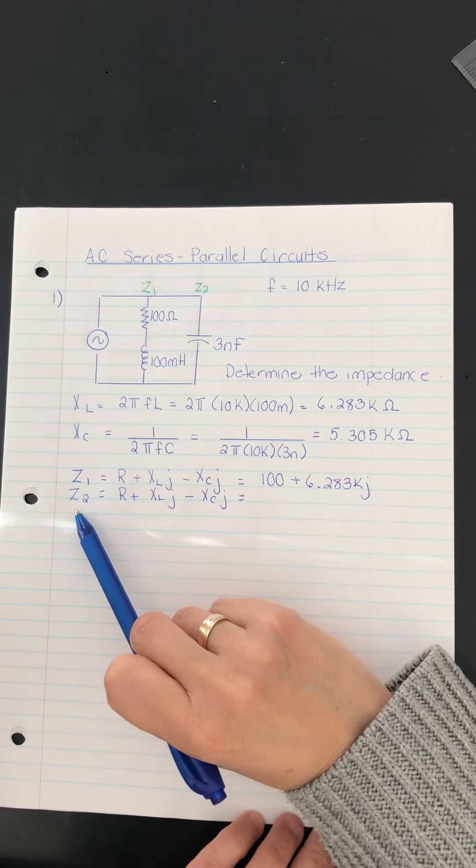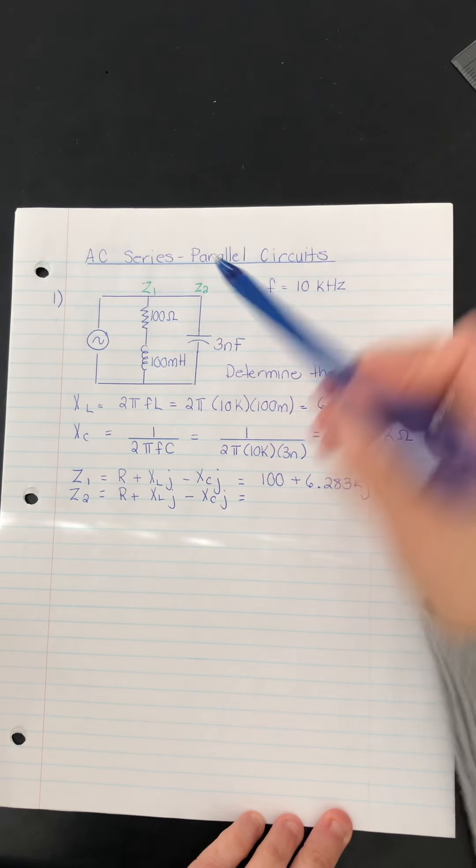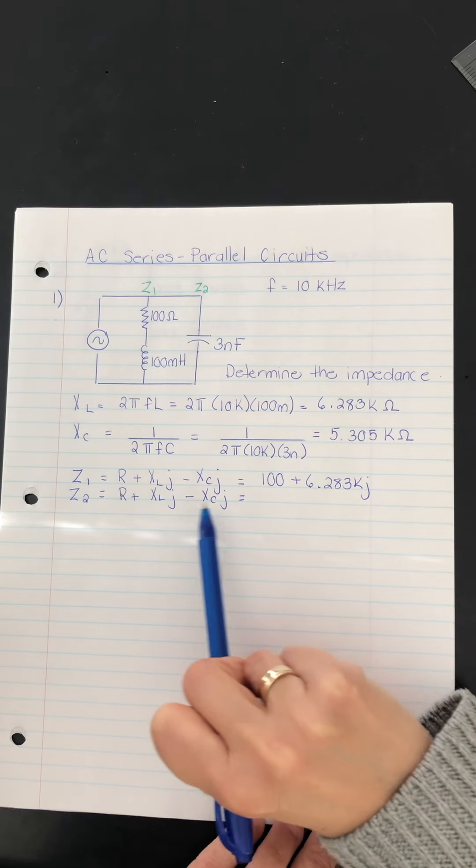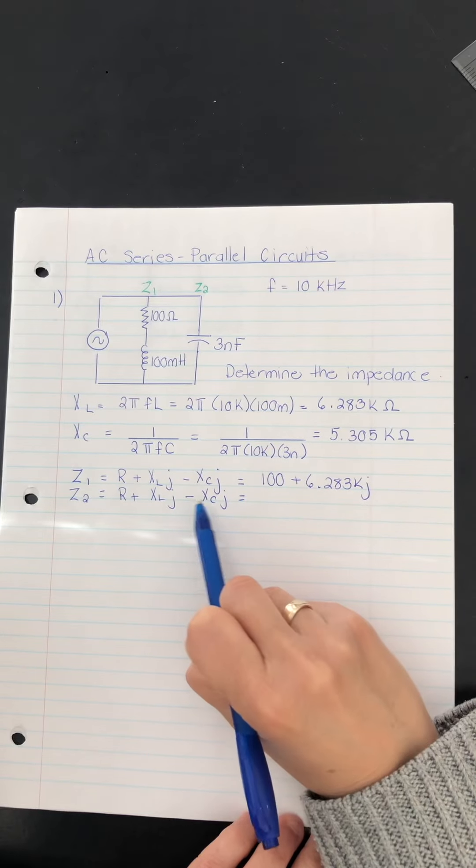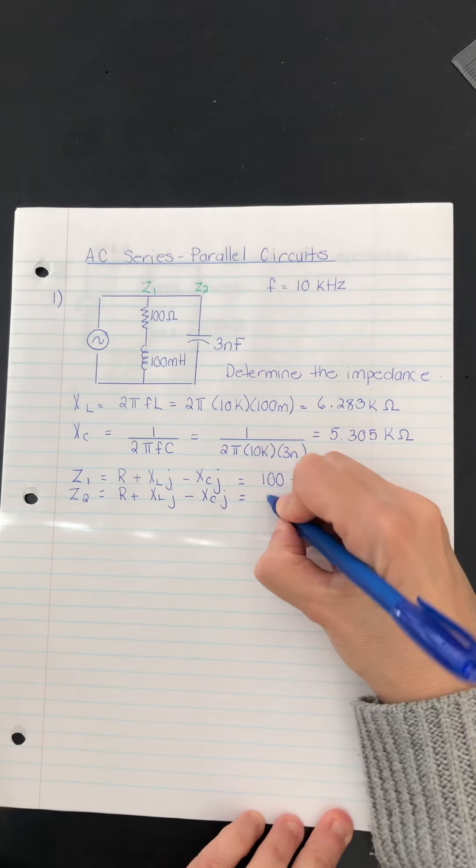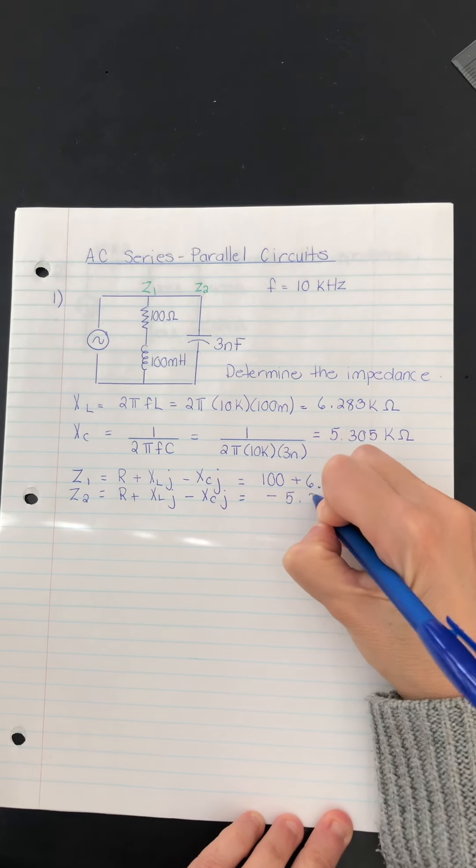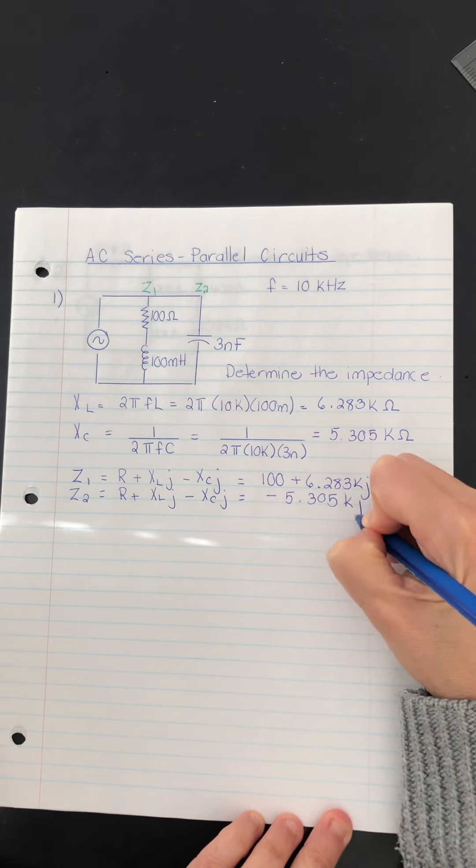What about for Z2? Well, that branch has no resistor, no inductor. So we're only going to have this third portion of the complex number. Negative XCJ. So negative 5.305 kiloJ.